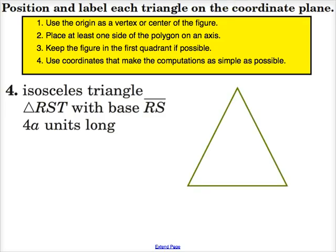So here's an isosceles triangle. I see it's got a base of RS. I could put R here, let's say, and S. And I know T would be the vertex. So if RS is the base, that means ST and RT must be the congruent sides.